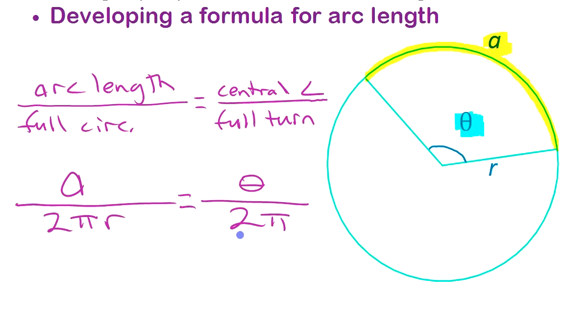If we simplify this, if we multiply both sides by 2π, it really simplifies both sides. We get arc length divided by the radius is the angle. Now by definition, that actually is how radians are defined.